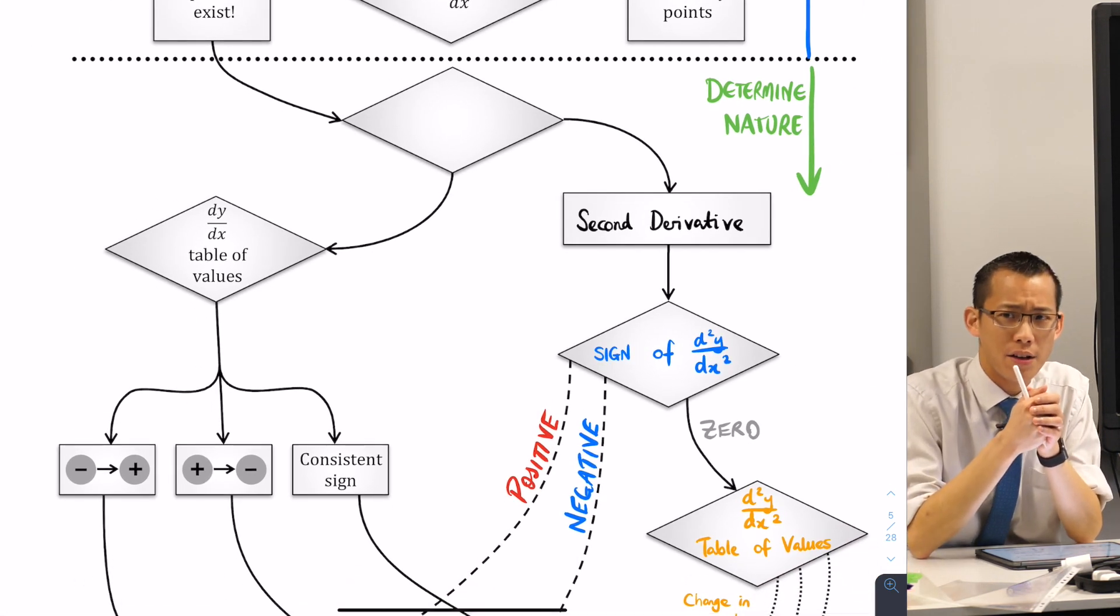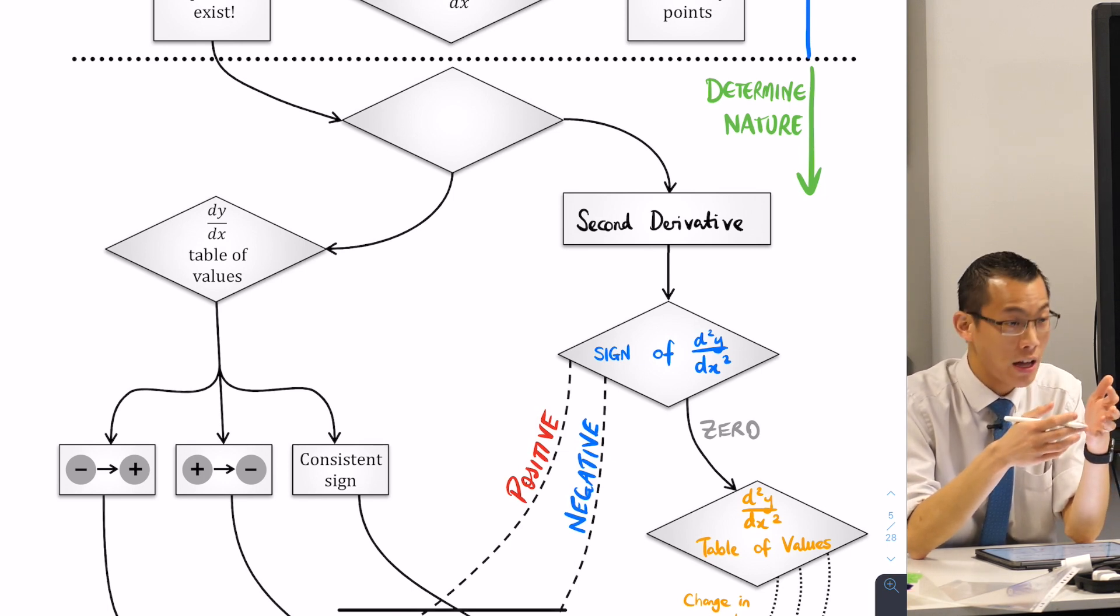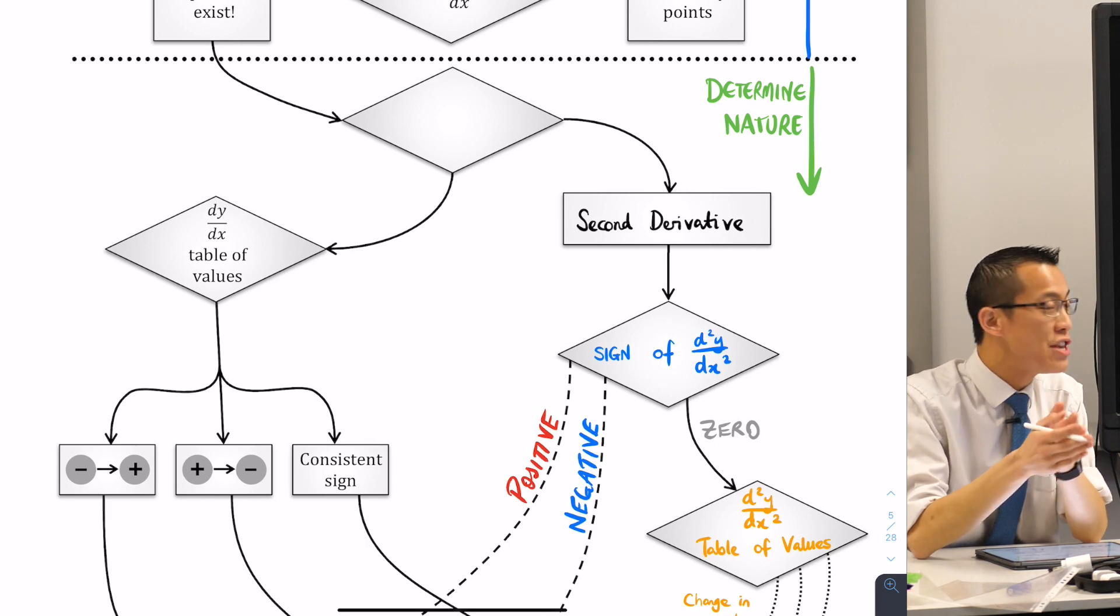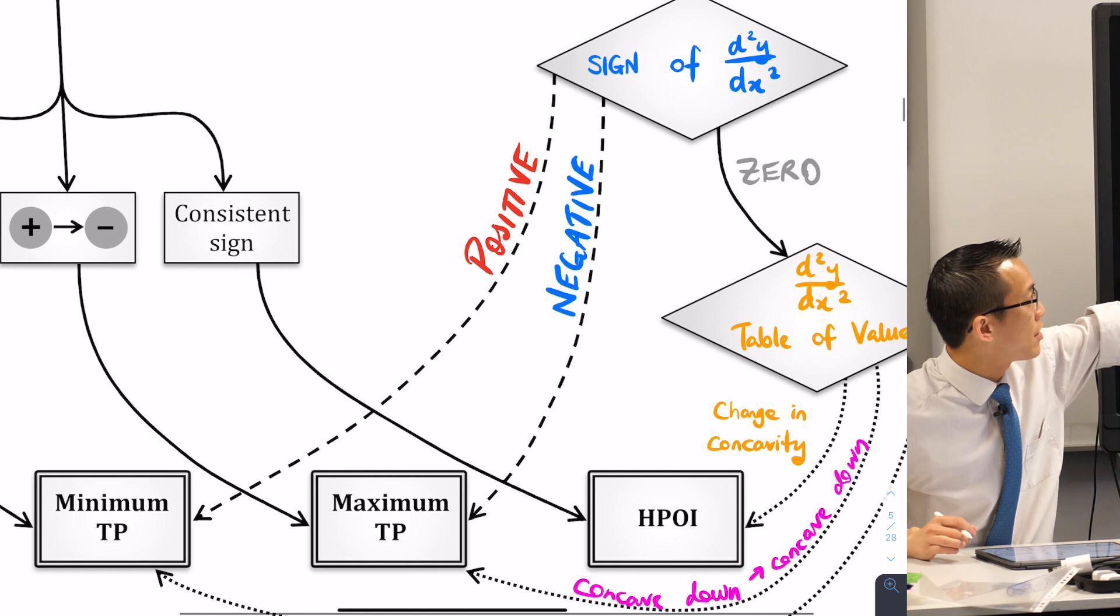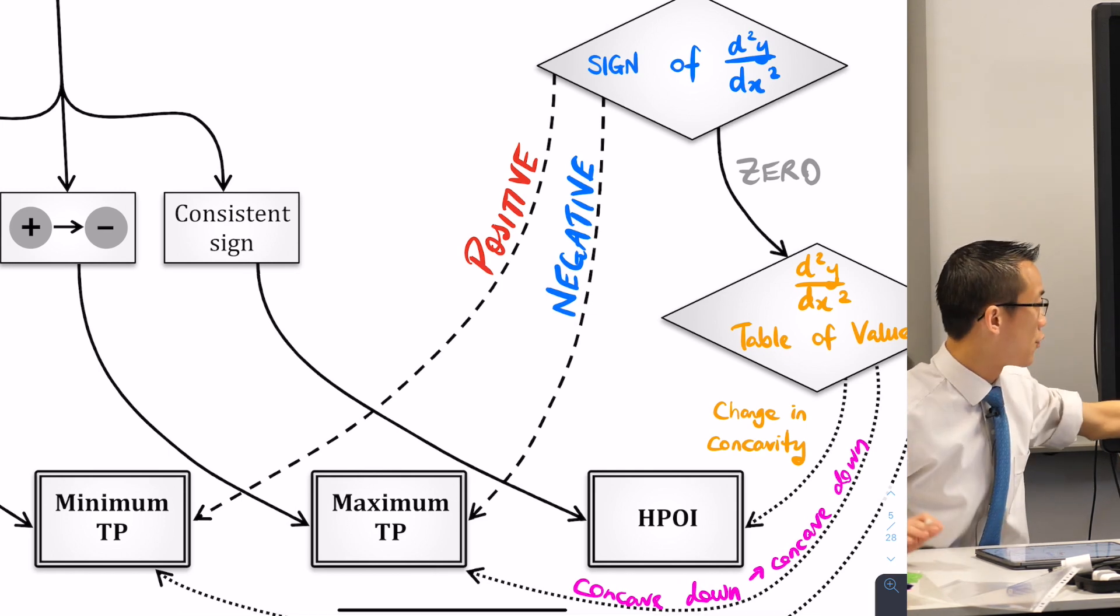Why would we try to use the second derivative? And the answer is if you get a function like the ones we've been having a look at, if they're easy to differentiate then you can avoid doing a table of values. Do you remember that? If you get a derivative and you pop it in right and you're like oh it's positive, done, you've got a minimum.